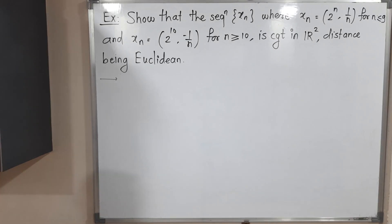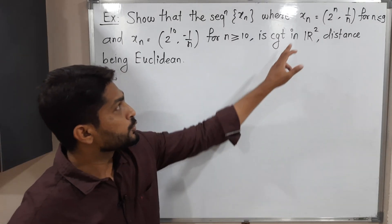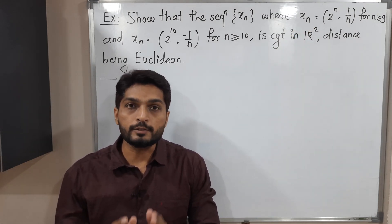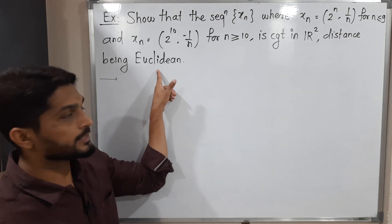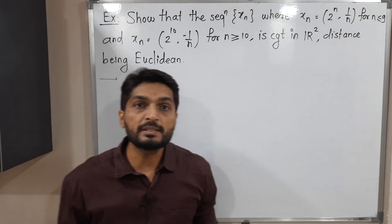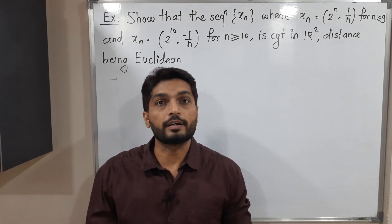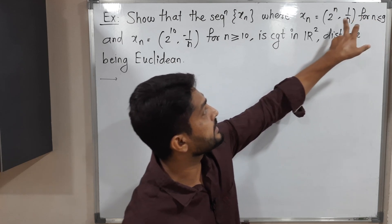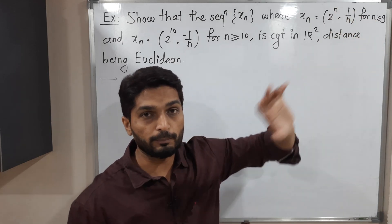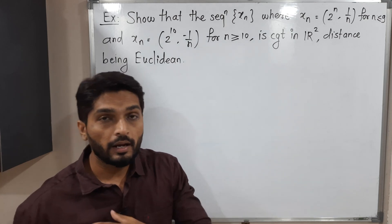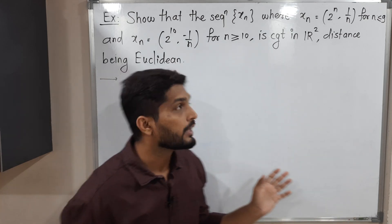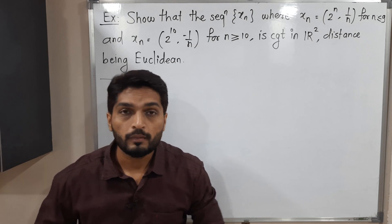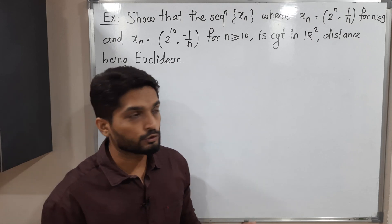In this video we are going to discuss this example. We have a sequence xn in R² and we have to prove that it is convergent in R² with Euclidean distance. The sequence xn is defined in two different ways: the first nine terms use the formula with first component 2 raised to n and second component 1/n, and all remaining terms have first component 2 raised to 10 and second component minus 1/n.